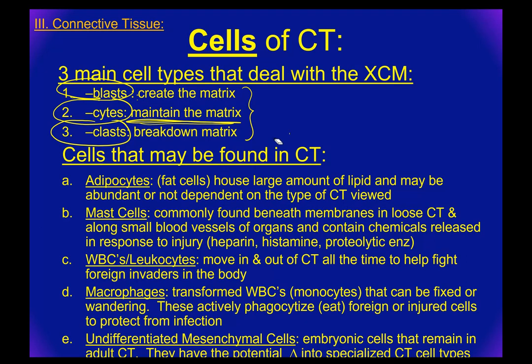The thing with connective tissue is that it is very diverse. You've got a lot of packing material with cells scattered through it, so you may find several different cell types there. Adipocytes are one of them — adipo, adipose, cytes means cells — so these are fat cells, and you may find them in all kinds of connective tissue.